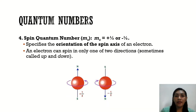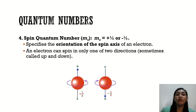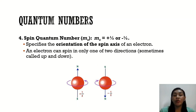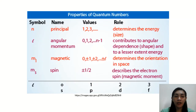The fourth type is the spin quantum number, M sub S, which can be positive one-half or negative one-half. It specifies the orientation of the spin axis of an electron — similar to the Earth spinning around on its own axis. An electron can spin in only one of two directions, positive one-half or negative one-half, sometimes called up or down. In summary, the principal quantum number determines energy, the angular momentum quantum number determines shape, the magnetic quantum number determines orientation, and the spin quantum number describes the electron spin or magnetic moment.